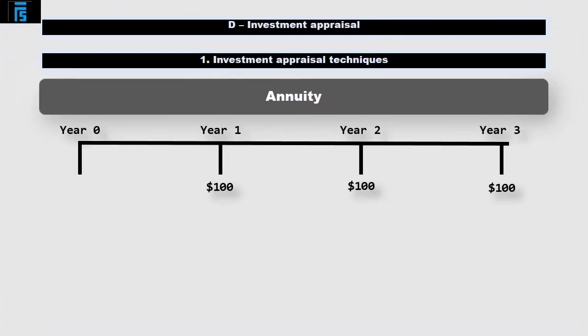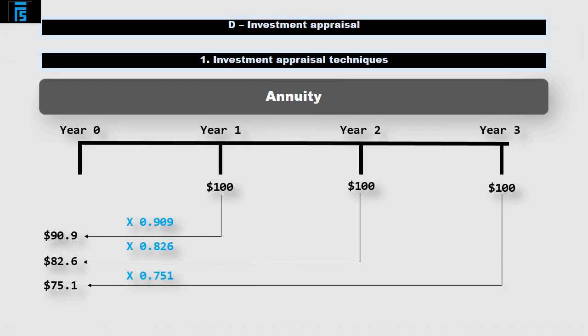Sometimes, cash flows repeat each period over several periods. For example, we might have a hundred dollars received each year for the next three years. A constant cash flow received each period for a fixed number of periods is called an annuity. To calculate the present value of this annuity, we could discount each cash flow individually and add them up. We'll continue to assume the annual rate of 10%. So, the present value of this three year annuity is $248.60.